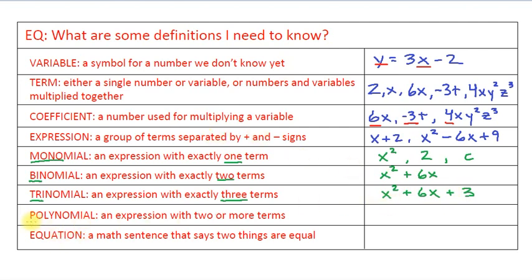And now polynomial. Poly just means many. So a polynomial is any expression with 2 or more terms. A binomial is a polynomial. A trinomial is a polynomial. But a monomial is not because it only has one term. Now a polynomial can have a whole bunch of terms. We can say this is 4x cubed plus x squared plus 6x plus 3. Now we have 4 terms. So 2 or more terms make a polynomial.